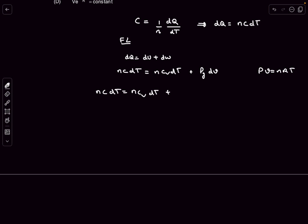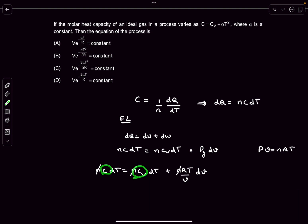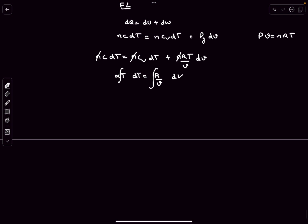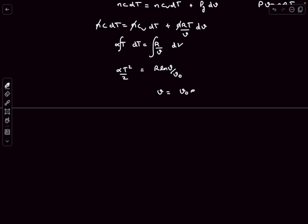From the given expression, C − Cv = αT². So we have αT² dT = R·dV/V. Integrating both sides gives αT²/2 = R·ln(V/V₀), which leads to V = V₀·e^(αT²/2R). The process equation therefore becomes V·e^(−αT²/2R) = constant, which corresponds to option B.